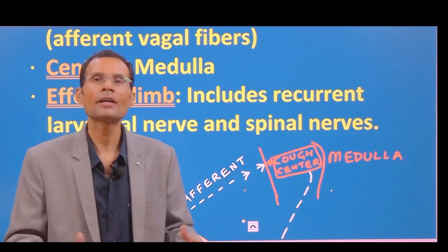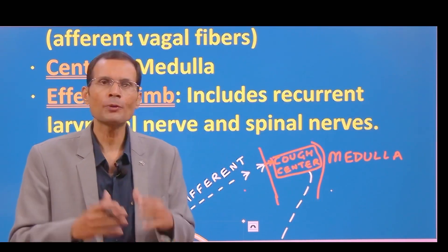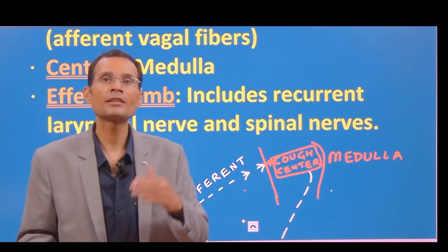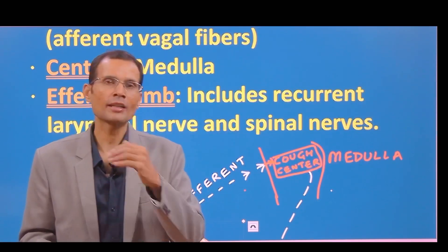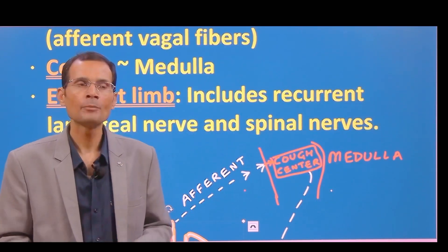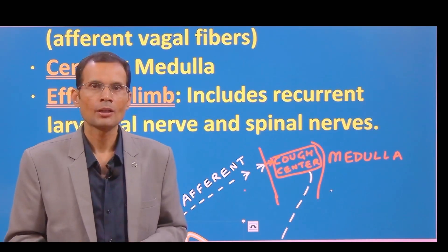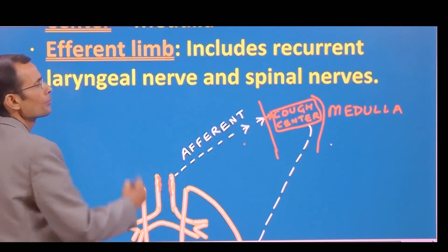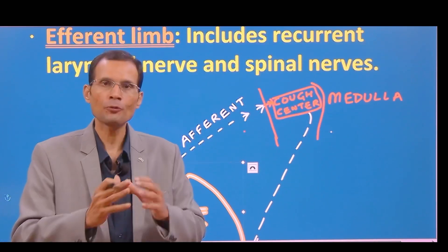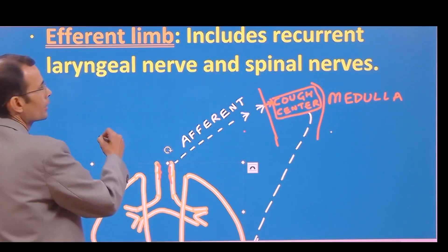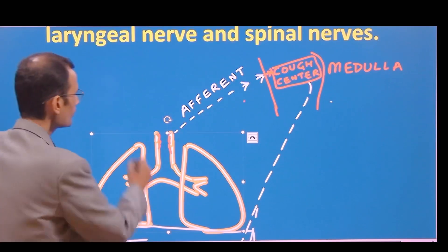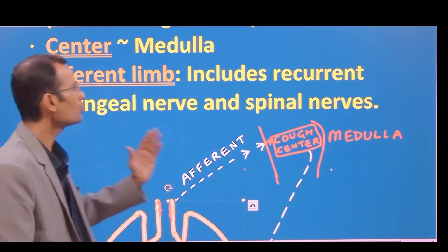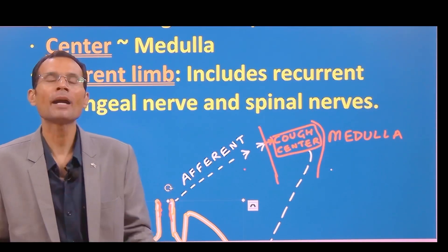The cough center is located in the medulla. A special mention should be made here: there are centers for various automatic or involuntary processes — a swallowing center, vasomotor center, respiratory center — all well-defined areas in the medulla. But in the case of the cough reflex, it is only known that it's in the medulla; it's not a very well-defined area.